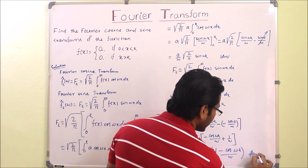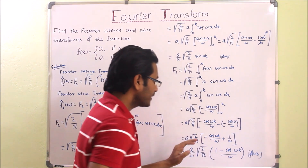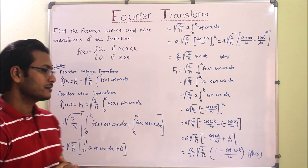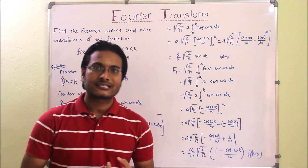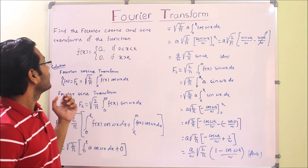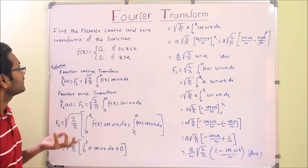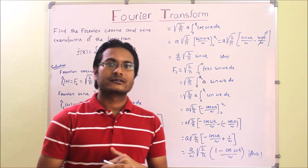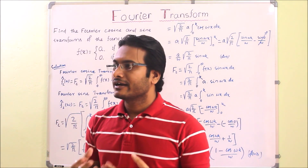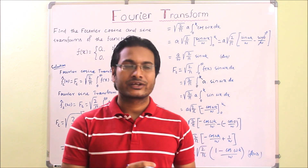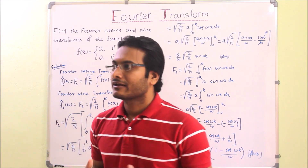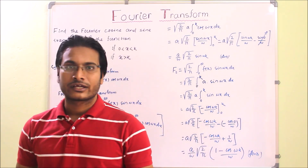So this is the Fourier sine transform of f(x). Solve as many problems as possible based on cosine and sine Fourier transforms. If you have any doubt, clarification, or shortcut trick ideas, write in the comment box — I will read and reply to all comments. Thank you.